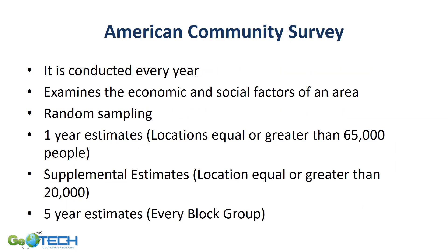The American Community Survey, using random sampling, asks questions about economic and social factors and is conducted every year. Depending on the size of your area, you can get estimates at different intervals. Areas equal to or greater than 65,000 people can get estimates every year. For very small areas such as a block group, estimates are only available once every five years.